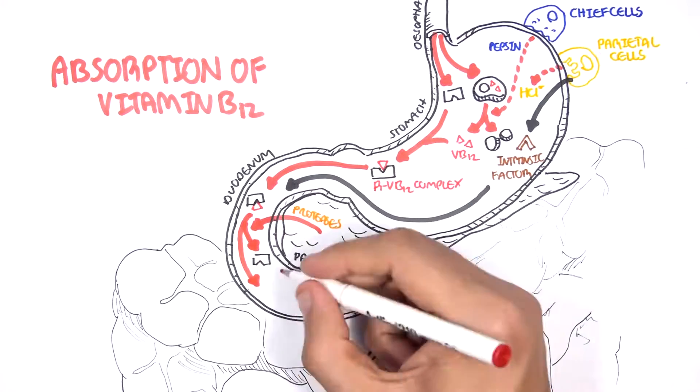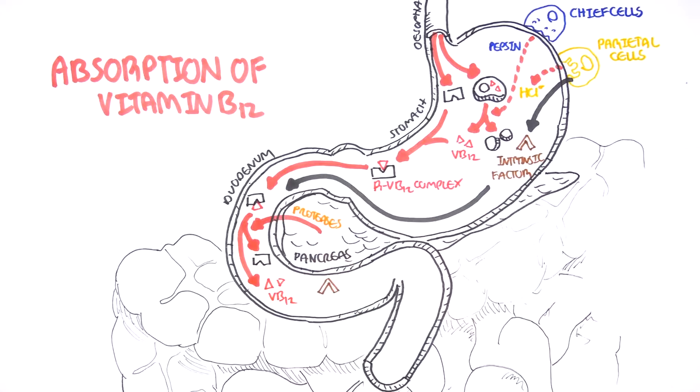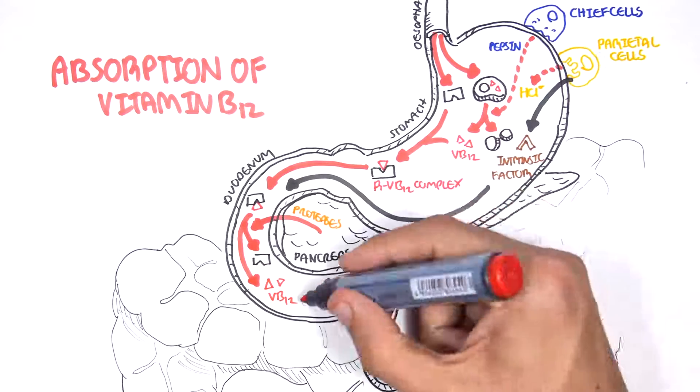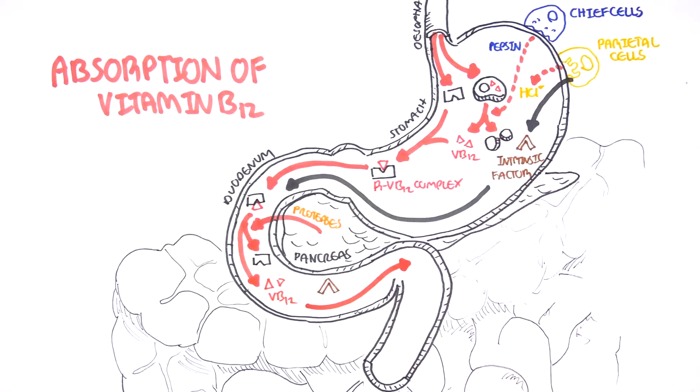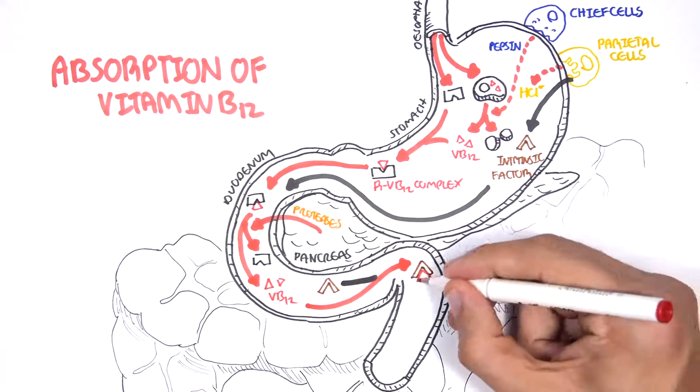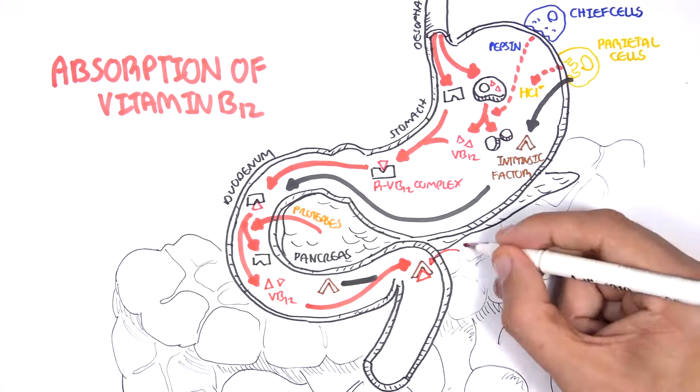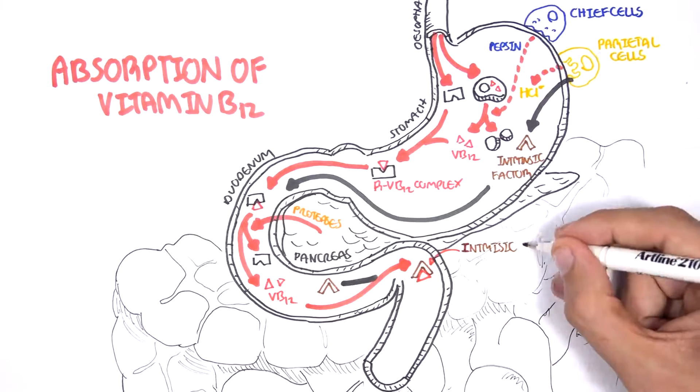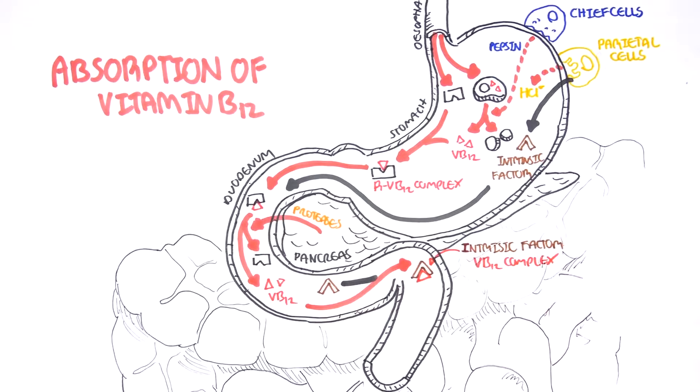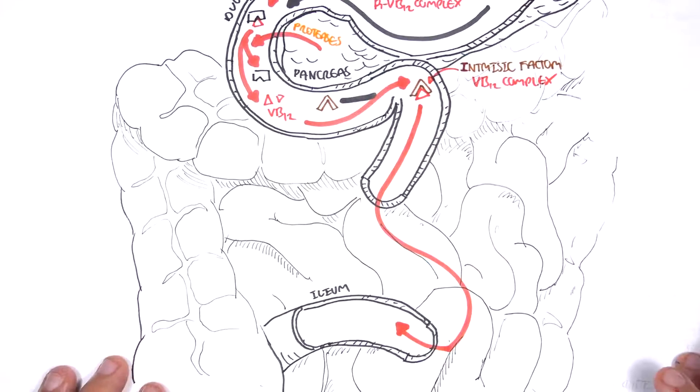In the small intestine, the liberated vitamin B12 has affinity for the intrinsic factor, and so they form the vitamin B12 intrinsic factor complex. This complex then will travel through the small intestine towards the end of the small intestine, the ileum.